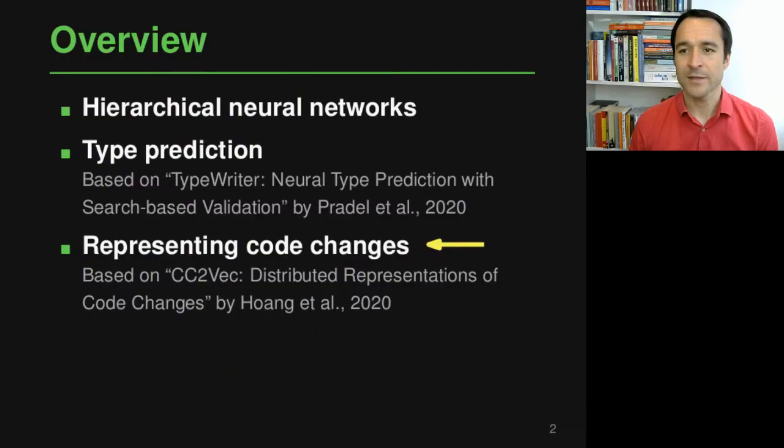Hi, welcome back to Analyzing Software Using Deep Learning. This is the third part of this module on using hierarchical neural networks for analyzing software. In this third part, we want to look at the second application of hierarchical neural models, which will reason about code changes and specifically try to find embeddings or vector representations of code changes so that you can make predictions about these code changes. This is based on a recent paper on a tool called CC2Vec, and if you're interested in more details, you should look them up in that paper.